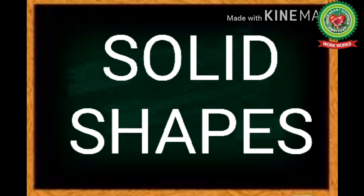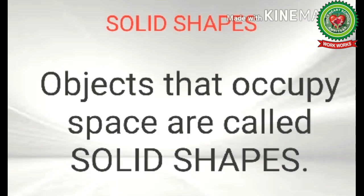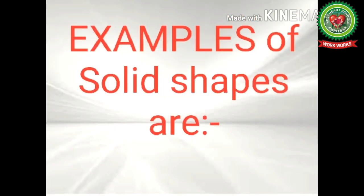Let's revise solid shapes again. Objects that occupy space are called solid shapes. Some examples of solid shapes are sphere, cylinder, cone, cuboid, and cube.